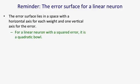We've seen this before, but let's start with a reminder about what the error surface looks like for a linear neuron. The error surface means a surface that lies in a space where the horizontal axes correspond to the weights of the neural net and the vertical axis corresponds to the error it makes. For a linear neuron with a squared error, that surface always forms a quadratic bowl.